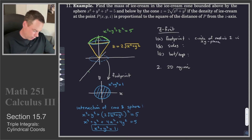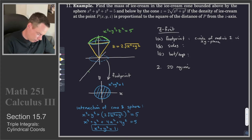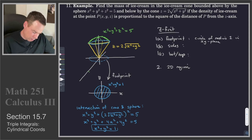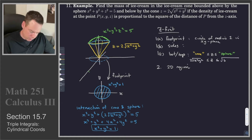What's our bottom and top? Looking back at the diagram, any vertical line segment going up in the z direction starts on the yellow cone surface and ends on the green sphere surface. So z is bounded below by the cone, 2 times the square root of x squared plus y squared, and above by the sphere, the square root of 5 minus x squared plus y squared.